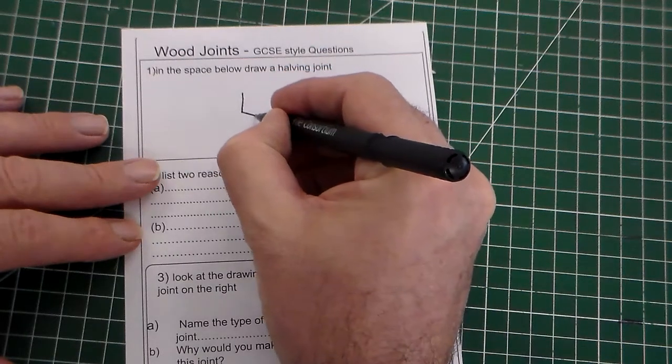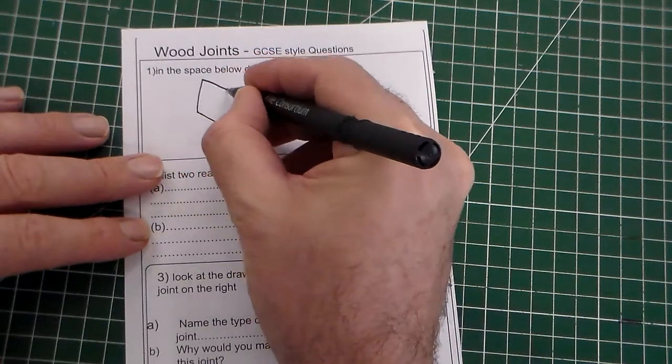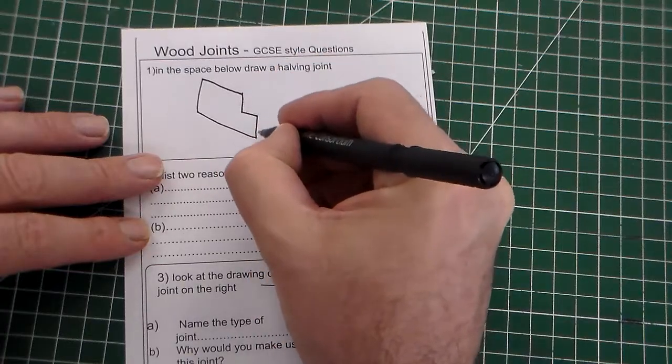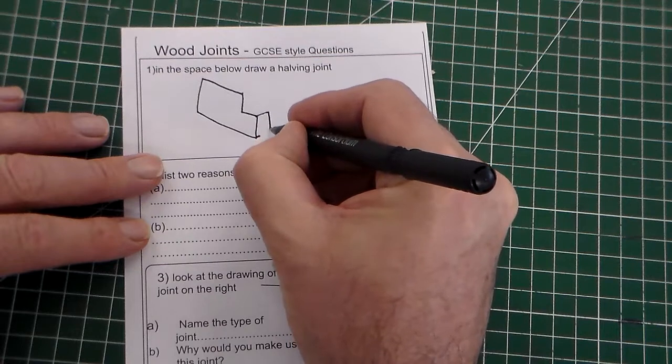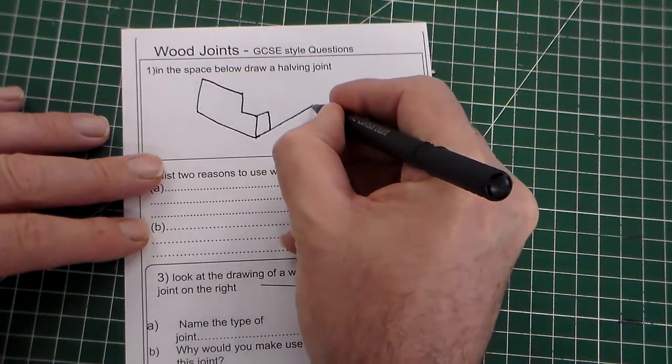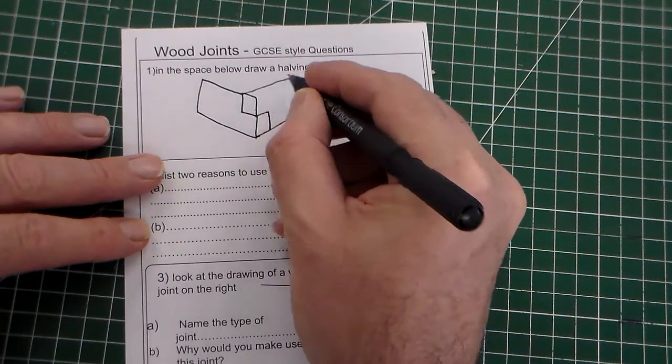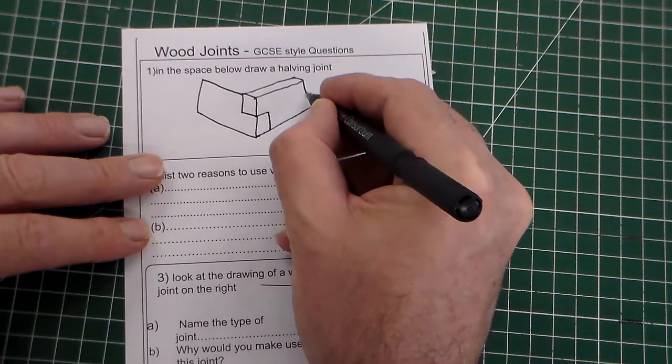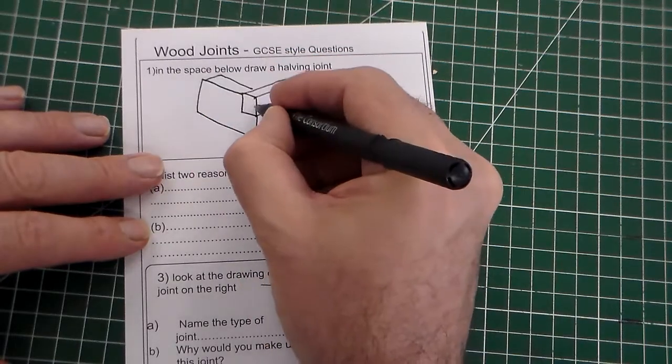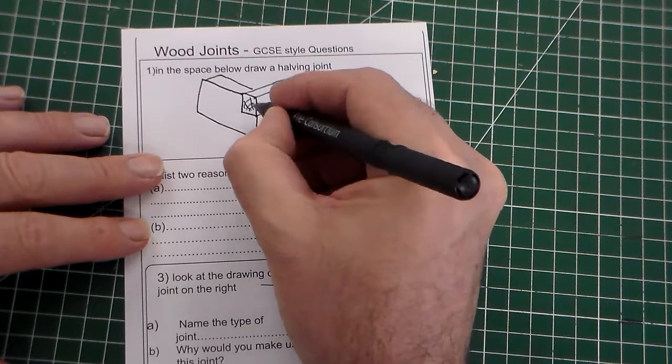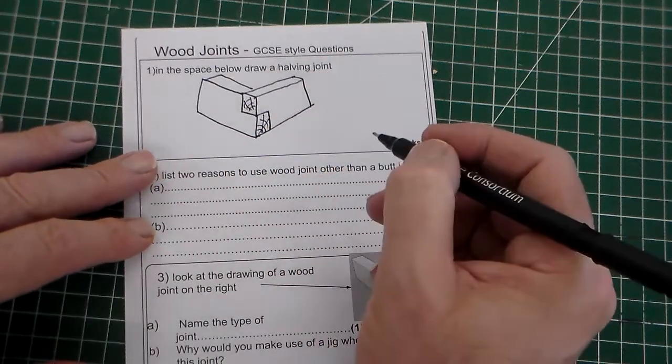We need to start here, draw one face if we try and draw it in a sort of isometric view. Then if we draw the other, or the end of this, here, out, the end of that, out like that, down, we can just draw. So there's our halving joint.